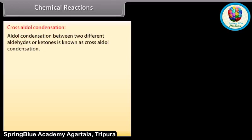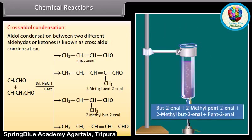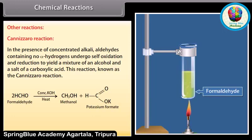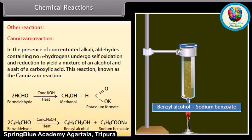Cross-aldol condensation: aldol condensation between two different aldehydes or ketones is known as cross-aldol condensation. A mixture of ethanal and propanal when heated with dilute sodium hydroxide solution gives four different products. Cannizzaro reaction: in the presence of concentrated alkali, aldehydes containing no alpha hydrogens undergo self-oxidation and reduction to yield a mixture of an alcohol and a salt of a carboxylic acid. This reaction is known as the Cannizzaro reaction. Formaldehyde reacts with concentrated potassium hydroxide to form methanol and potassium formate. Benzaldehyde reacts with concentrated sodium hydroxide to form benzyl alcohol and sodium benzoate.